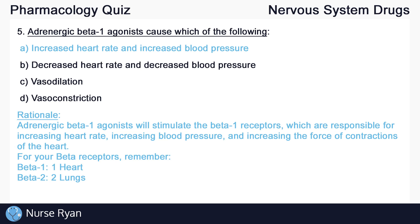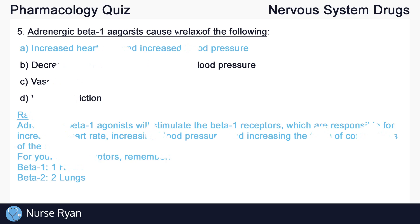For your beta receptors, we can always remember beta-1 because we have one heart — it affects the heart and blood pressure — while beta-2, we have two lungs, so beta-2 receptors affect the lungs.